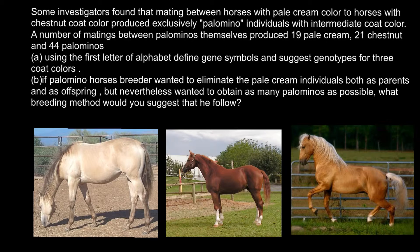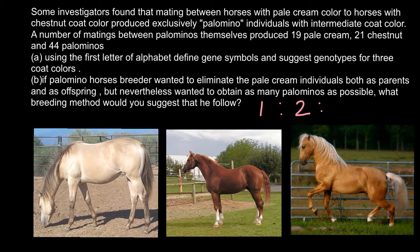To answer the first question, we have two hints. The first hint is that Palomino color is intermediate between pale cream and chestnut — lighter than chestnut but darker than pale cream. The second hint is that when we cross Palominos among themselves, we get a ratio of 1 to 2 to 1: 19 pale cream, 21 chestnut, and 44 Palominos — approximately half of the Palomino number on each side.